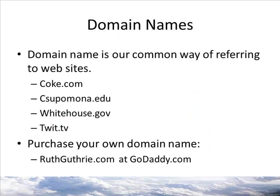Let's talk about domain names a little more. The domain name is the more common and user-friendly way of describing the website or location you are looking for. Examples are coke.com, csupomona.edu, whitehouse.gov, or twit.tv. Anyone can purchase a domain name if it isn't already taken. Try going to godaddy.com and typing in your name dot com to see if it's available. Domain names were $9 a year when I checked, but you can find them cheaper. You can purchase hosting services from these sites too.